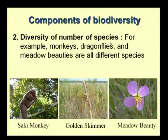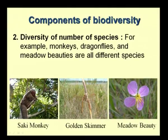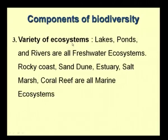The second component is the diversity of number of species. Monkeys, dragonflies, and meadow beauties are all different species. The third component is the variety of ecosystems. Lakes, ponds, and rivers are all freshwater ecosystems; rocky coasts, sand dunes, estuaries, salt marshes, and coral reefs are all marine ecosystems. Biodiversity requires a variety of ecosystems to exist in a particular area.